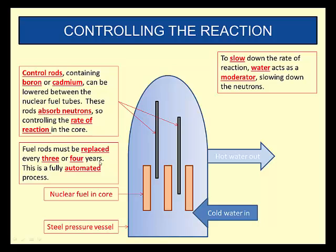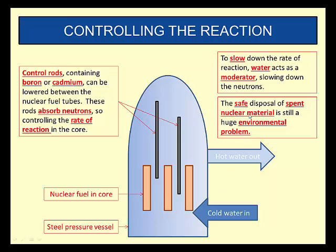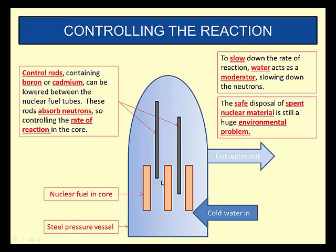These fuel rods must be replaced every three or four years, and this is a very highly automated process. You then have to get rid of these rods, and the problem is that the safe disposal of spent nuclear material is still a huge environmental problem — we haven't yet sorted out how to dispose of these rods really safely. But that gives you an idea of how we can control a nuclear reaction using control rods.